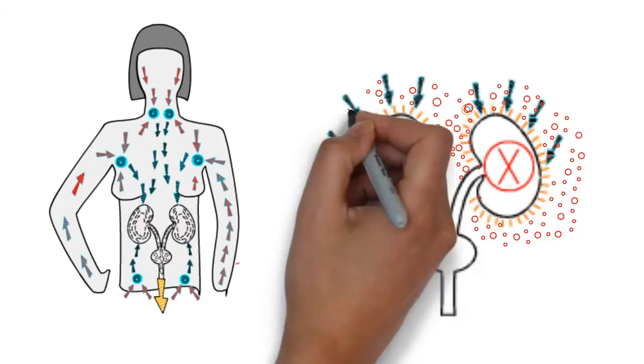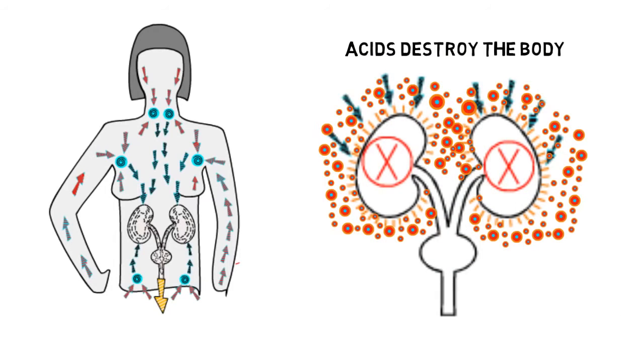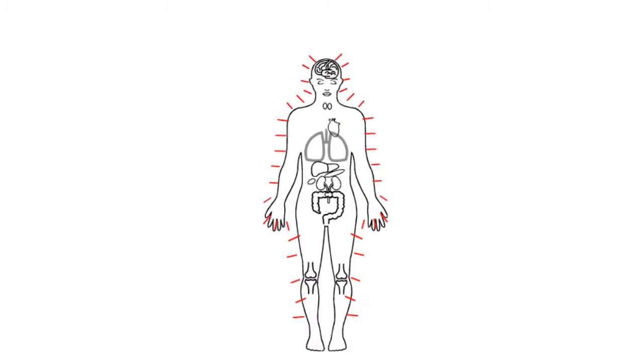If the kidneys get clogged, your sewer backs up. It's that simple. This is the cause of most so-called diseases, everything from acne to arthritis. Backed up lymph becomes acidic causing pain and inflammation.